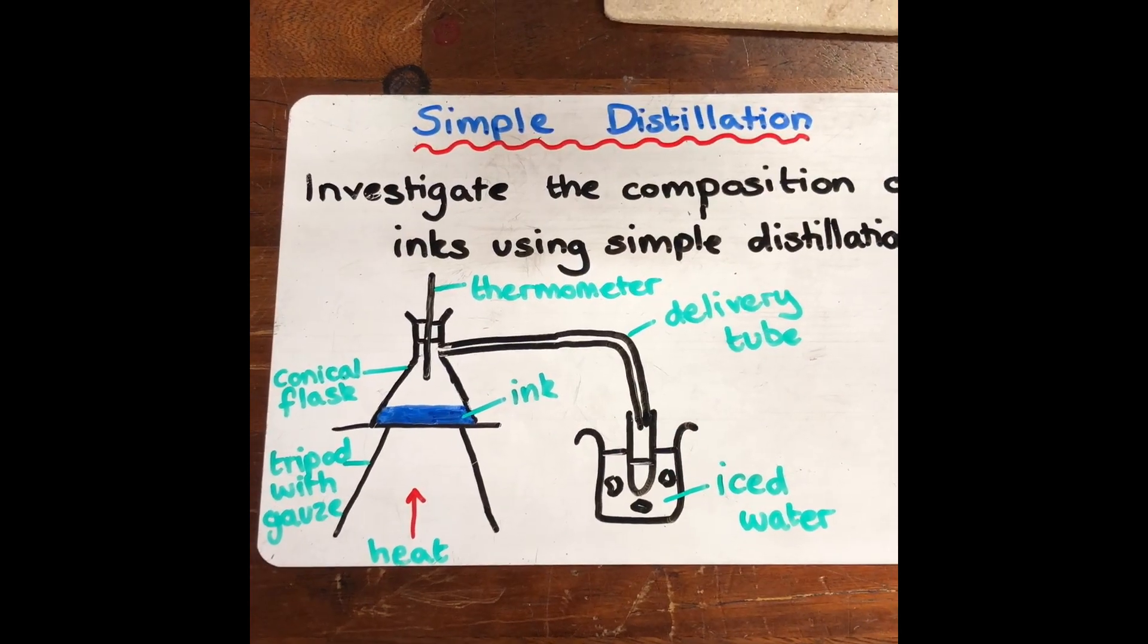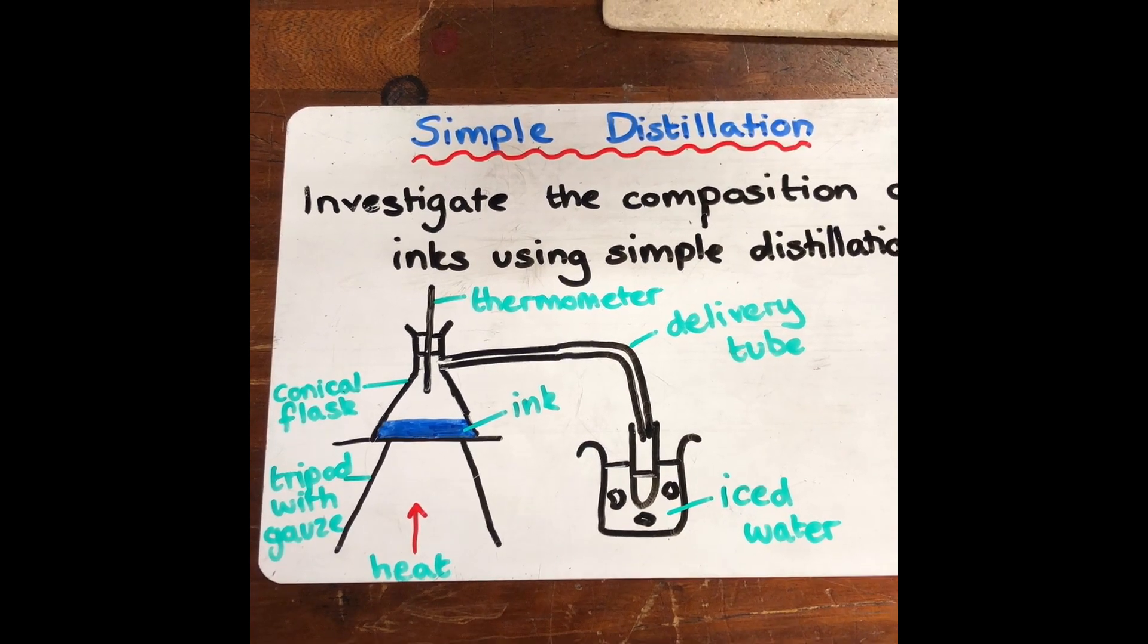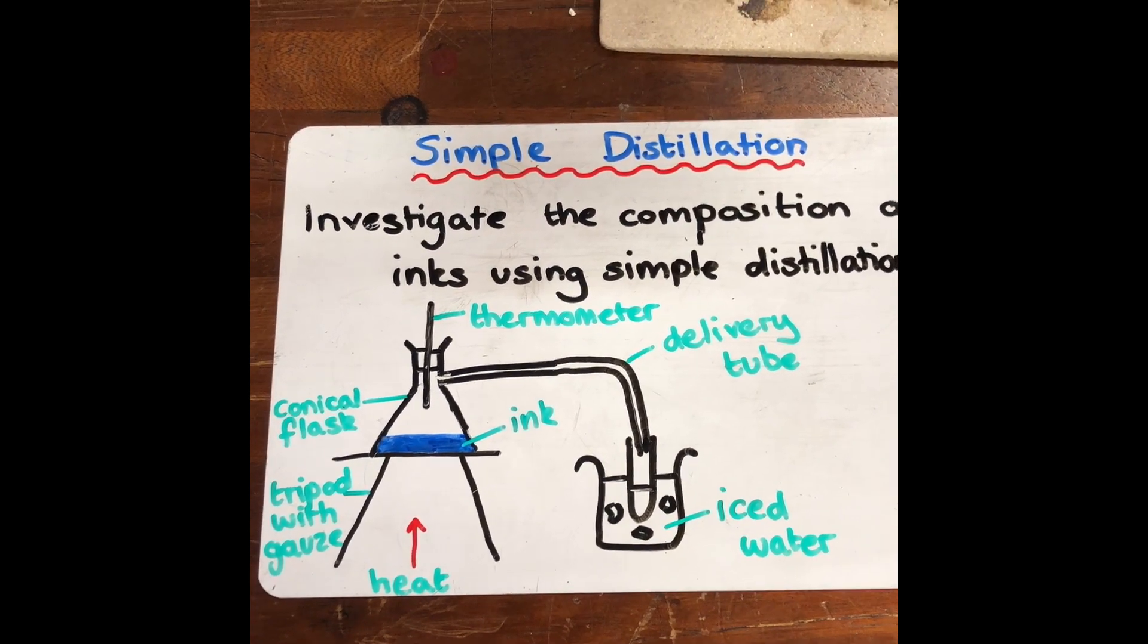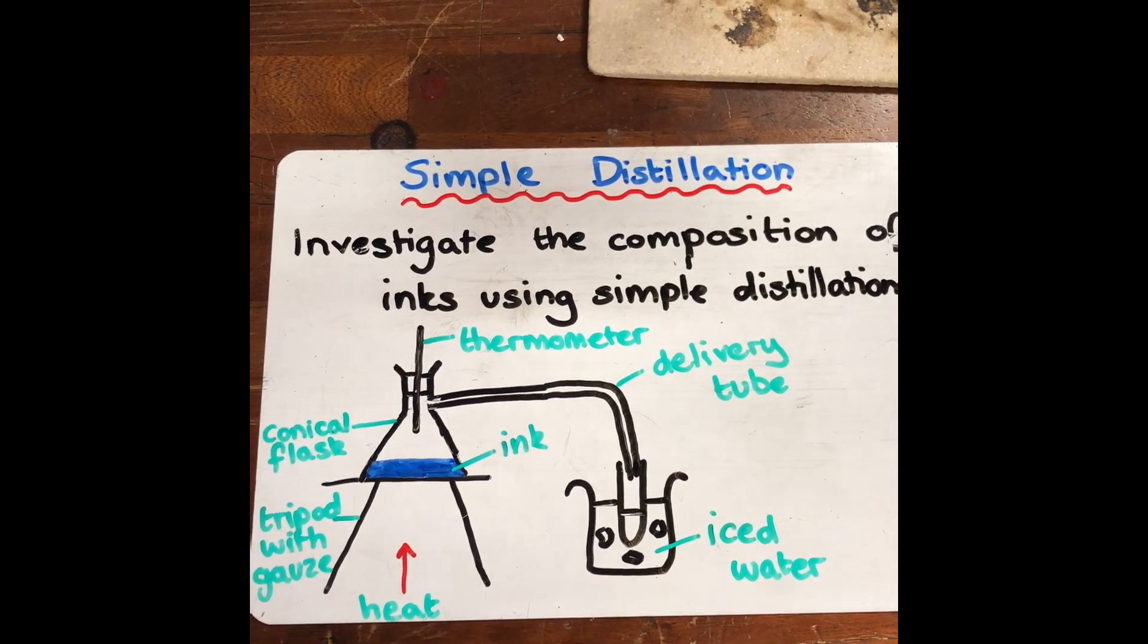The equipment that you need to carry out this experiment: you've got a conical flask with your inky water on top of a tripod with a gauze on top, which you're going to heat with a Bunsen burner. And then you've got a thermometer that comes out of the top.